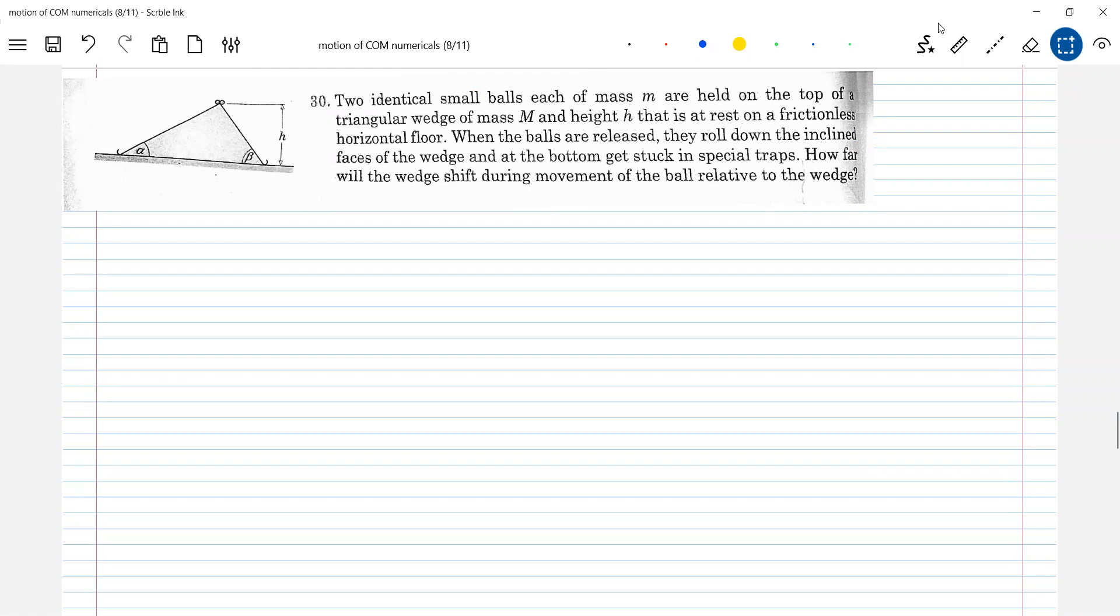Read the question carefully. They are not connected. Those two identical small balls. Earlier we took they are connected by a string. Now they are not connected. It's there in Pathfinder. So I guess I took this problem where earlier we took blocks are connected, M1 M2 placed on the wedge. Here the balls are free to move.